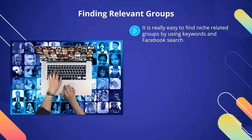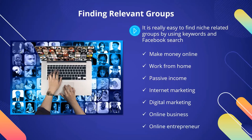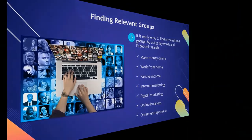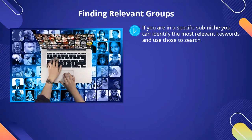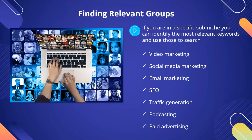Finding relevant groups. It is really easy to find niche-related groups by using keywords and Facebook search. If you are in the make money online niche, then just enter terms that are relevant such as: make money online, work from home, passive income, internet marketing, digital marketing, online business, online entrepreneur. If you are in a specific sub-niche, you can identify the most relevant keywords and use those to search — for example, video marketing, social media marketing, email marketing, SEO, traffic generation, podcasting, paid advertising. Using the right keywords is important here. There are a number of ways that you can create a list of keywords relevant to your niche — using the free Google Keyword Planner is one of the easiest ways to do this. Once you receive a list of groups, look for those that have the most activity and have a large member base.